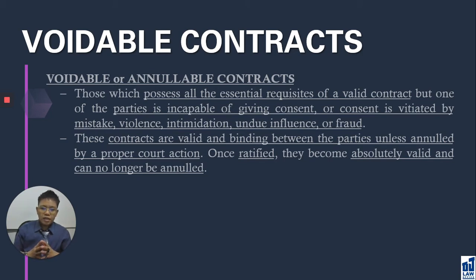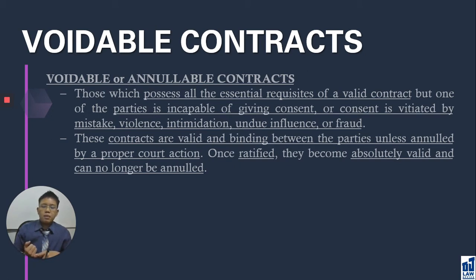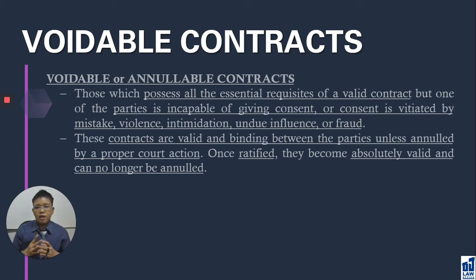As an injured party, you have a choice whether you want to annul the avoidable contract or to ratify it. If you annul it, the avoidable contract will be invalidated. If you ratify it, the avoidable contract will become valid and cannot be annulled anymore. Annulment and ratification are exclusive of one another — once you choose one, you cannot change your choice.